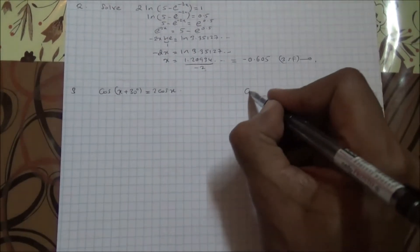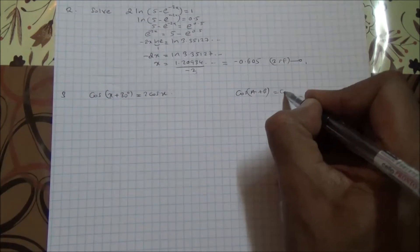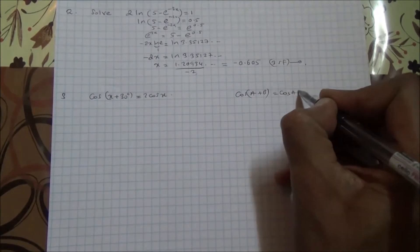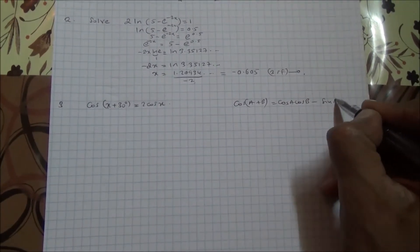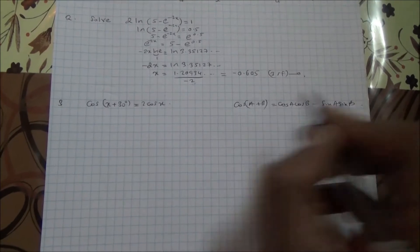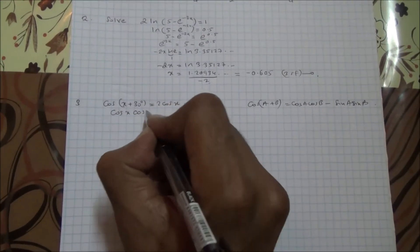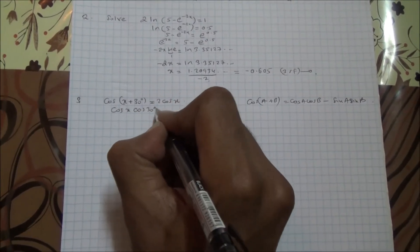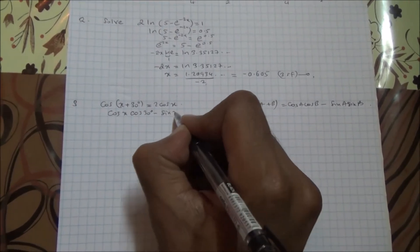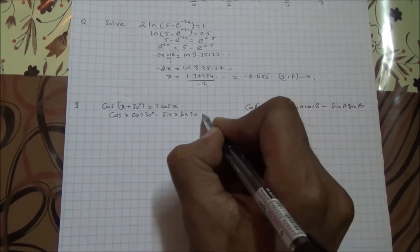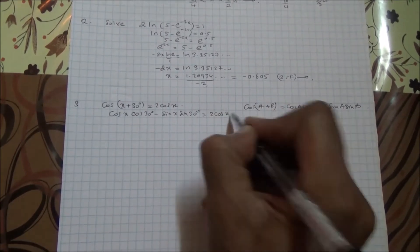What is that? This is cos of (a + b), which is basically cos(a)cos(b) minus sin(a)sin(b). So this is going to be cos(x)cos(30) minus sin(x)sin(30 degrees), equal to square root 2 cos(x).